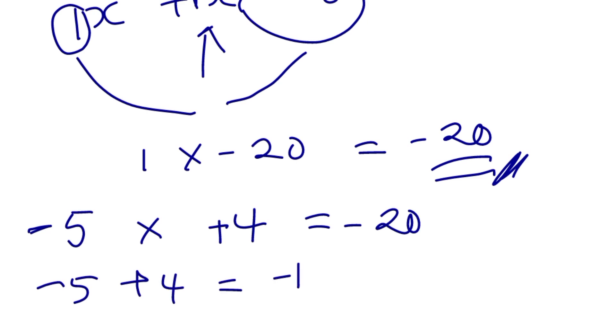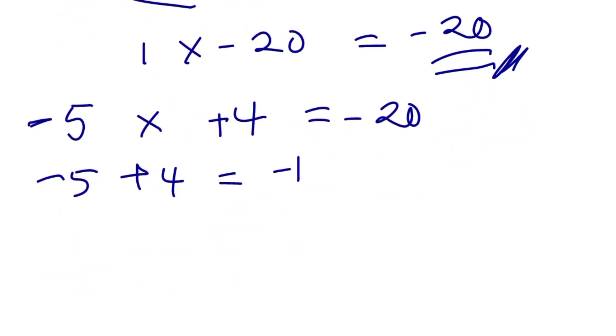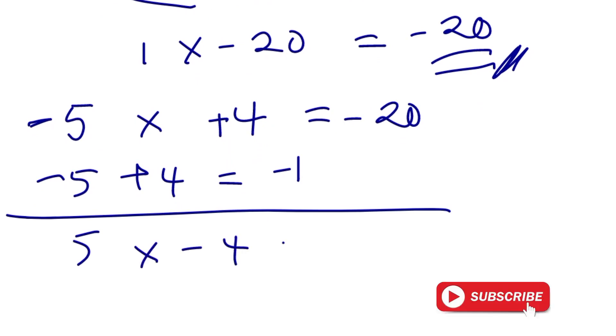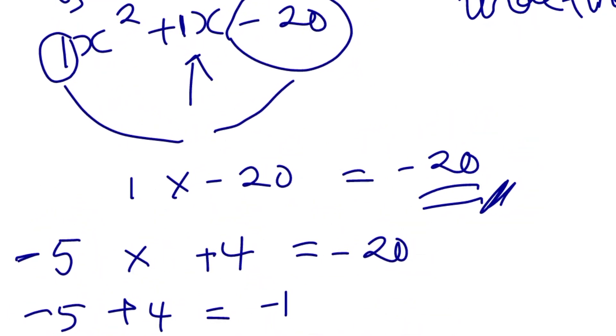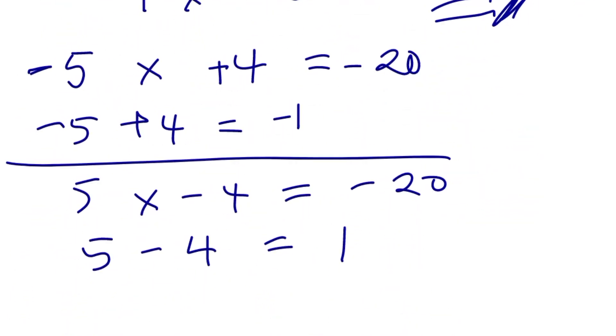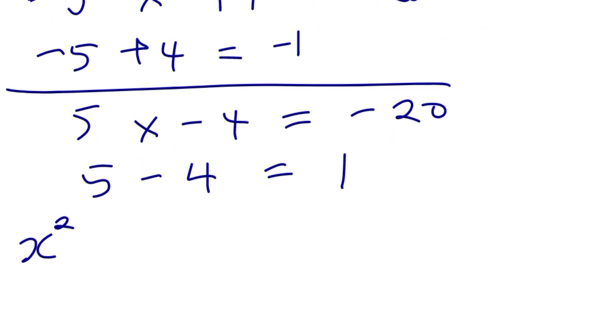So what we need to do here is we'll need to change the sign. We take 5 and negative 4. So we end up having negative 20. Then when we subtract this value, we have 1. So let's substitute into the equation above. We have x squared plus x minus 20. So we can rewrite that as x squared plus 5x minus 4x minus 20.